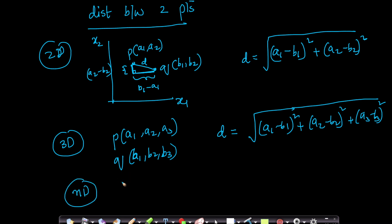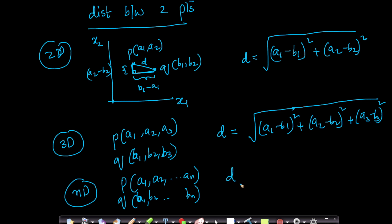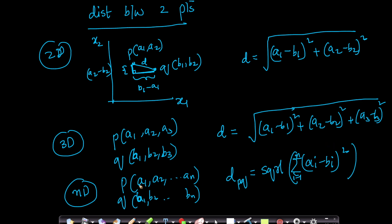Similarly, in n-dimensional space, if you have two points P = (A1, A2, ..., An) and Q = (B1, B2, ..., Bn), the distance between P and Q is the square root of the sum from i = 1 to n of (Ai − Bi)². I have just written it in a more concise summation form — instead of expanding A1 − B1 squared plus A2 − B2 squared and so on. The same idea from 2D and 3D is extended to n-dimensions.